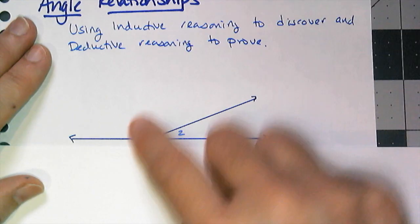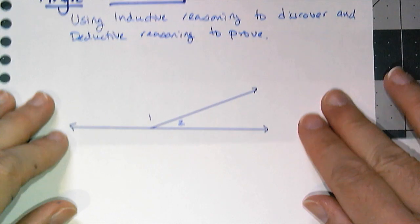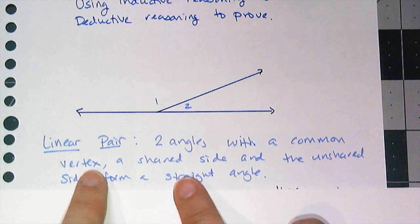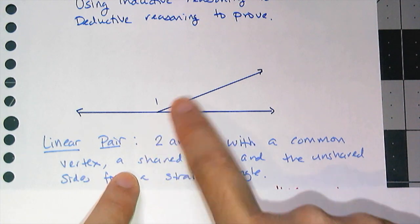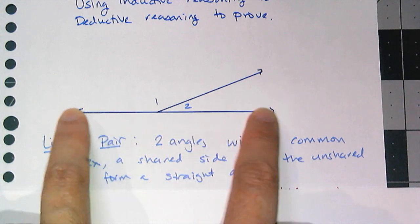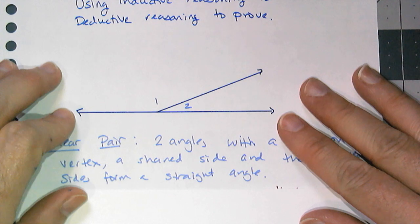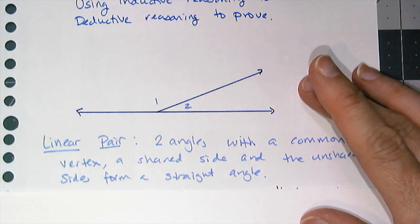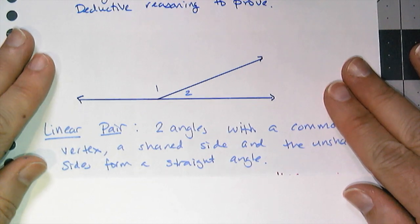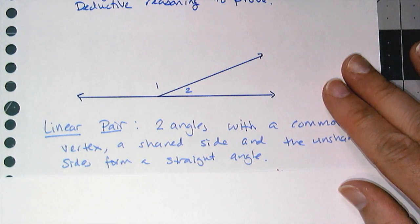When you see two angles like this, your brain should say linear pair. Remember the definition of a linear pair: there are two angles with a common vertex, a shared side, and the unshared sides form a straight angle. So that's a linear pair. We kind of already know that these angles have to be supplementary just from observation, but I can prove it using definitions and previously proven things.